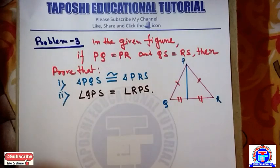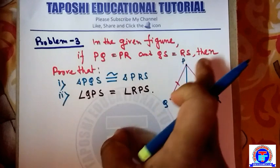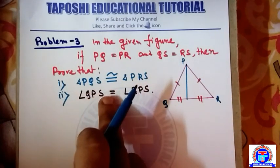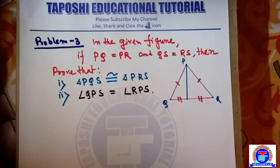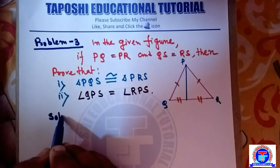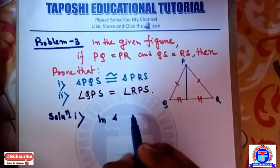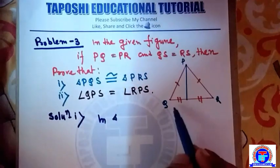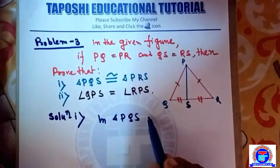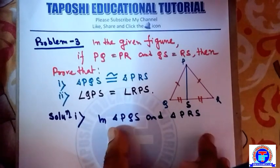Problem number 3: In the given figure, if PQ is equal to PR and QS is equal to RS, then prove that: (1) triangle PQS is congruent to triangle PRS, and (2) angle QPS is equal to angle RPS. Solution number 1: In triangles PQS and PRS, we have PQ is equal to PR (given), and PS is equal to PS (common side).